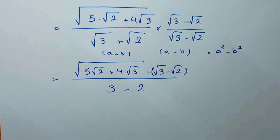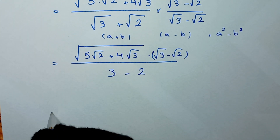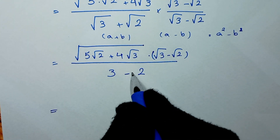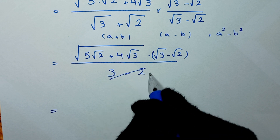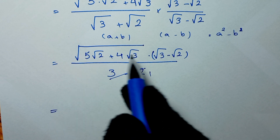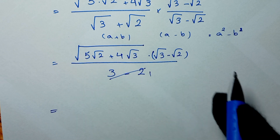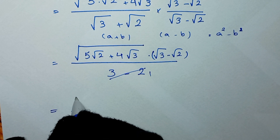In the next step, 3 minus 2 is 1, so the denominator is 1. We write square root of the numerator times square root of 3 minus square root of 2.